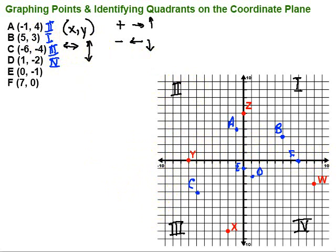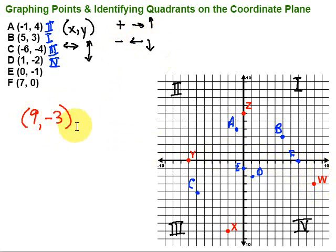Now let's take a look at identifying and providing an ordered pair given some points on the coordinate plane. We've got points W, X, Y, and Z. We start at the origin 0, 0 and go left or right first — that's the x-coordinate. To get to W, I go 1, 2, 3, 4, 5, 6, 7, 8, 9 in the positive direction to the right, so the x-coordinate is 9. Then I'm just above the point, so I go down 1, 2, 3. Since I went down, that's negative 3. So point W is located at 9, negative 3.